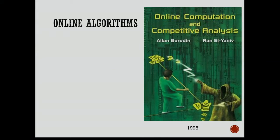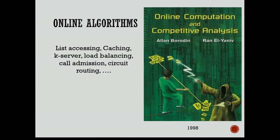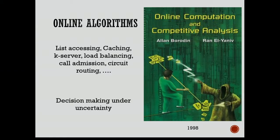The second part of my title is Online Algorithms. Here's a textbook written on Online Algorithms in 1998. This faceless, evil-looking guy is supposed to be the adversary, who's making life difficult for this guy walking a tightrope, balancing something on his hand — this is the algorithm. If you see the table of contents of this textbook, it has problems with names that don't have anything to do with online ads.